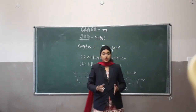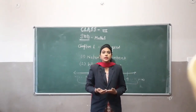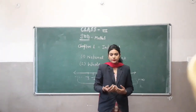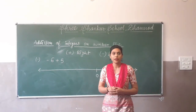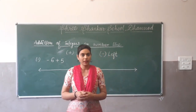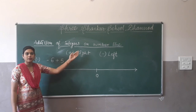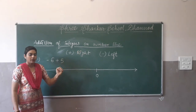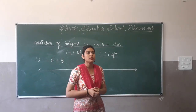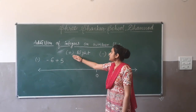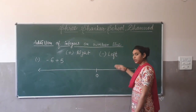After defining integers, I will show you how we can represent integers on the number line. The topic is addition of integers on the number line. First of all, I will introduce that if we want to use a number line, a plus sign shows us that we have to jump to the right side of the number line, and a minus sign shows that we have to jump to the left side.